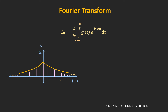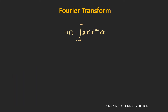Since the frequency spectrum is continuous, we can no longer define the frequency components by cn. This continuous frequency spectrum is defined by the following expression, which shows the Fourier transform of the signal g(t). That means if we take the Fourier transform of g(t), we get the continuous function G(f) in the frequency domain.